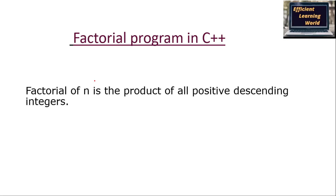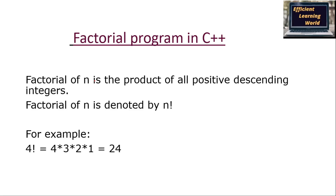First, let's see what factorial is. The factorial of n is the product of all positive descending integers. For example, factorial of n is represented by n! For example, if I want to calculate the factorial of 4, I have to multiply all the positive descending integers from 4 down to 1: 4 × 3 × 2 × 1, which equals 24.